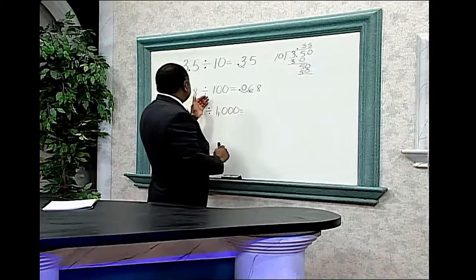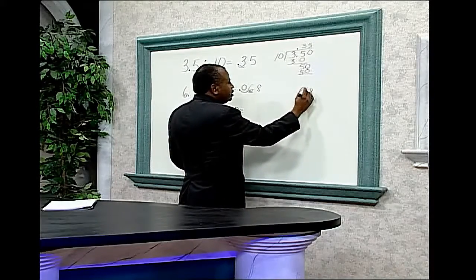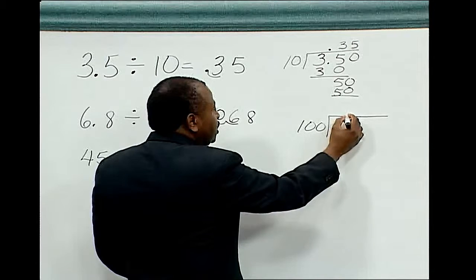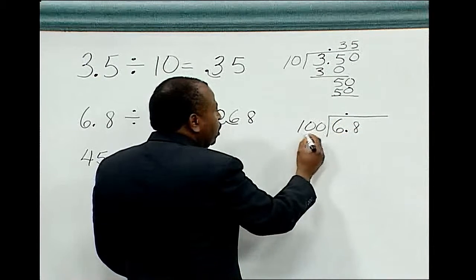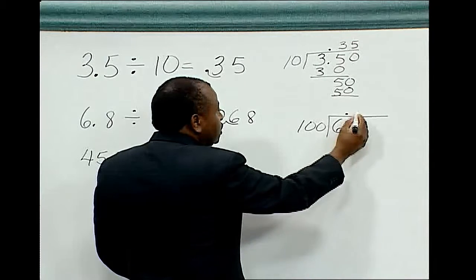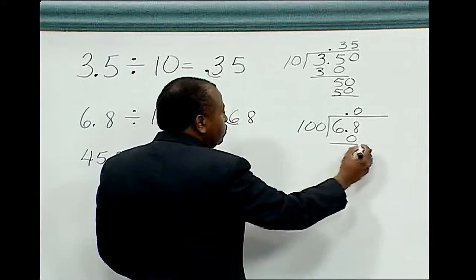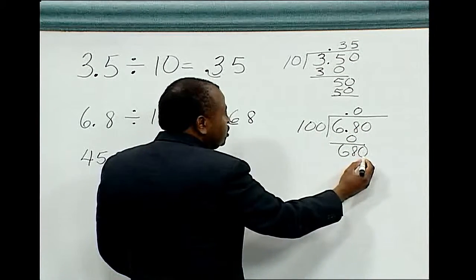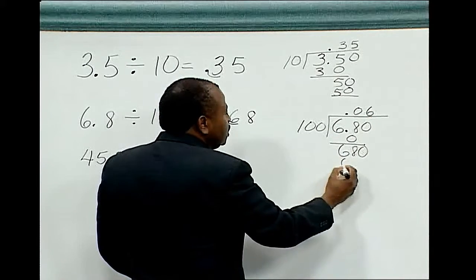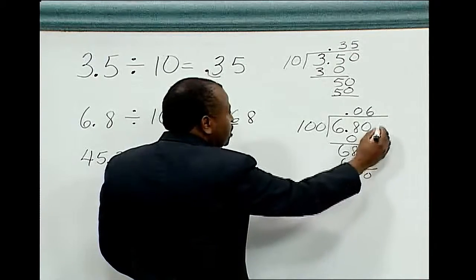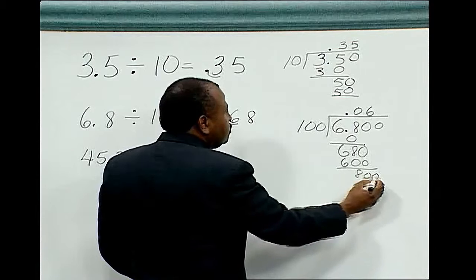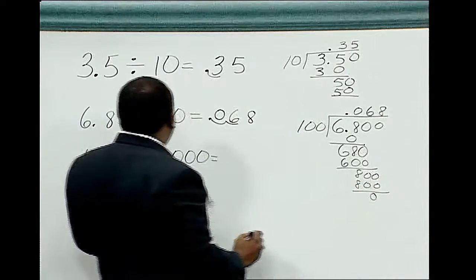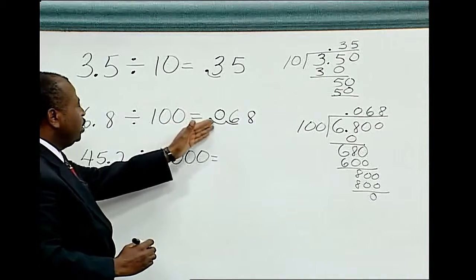Another way to do this problem is to divide six point eight by one hundred using long division. Step one: place the decimal point in the answer directly above the decimal point that is in the problem. One hundred will divide into sixty-eight zero times. Zero times one hundred is zero; subtract, we get sixty-eight. Add a zero, bring the zero down. One hundred divides into six hundred eighty six times. Six times one hundred is six hundred; subtract, we get eighty. Add a zero, bring it down. One hundred divides into eight hundred eight times. Eight times one hundred is eight hundred; subtract eight hundred from eight hundred, we get zero. Therefore, six point eight divided by one hundred equals point zero six eight.